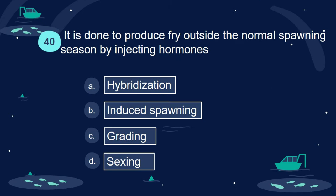Question 40. It is done to produce fry outside the normal spawning season by injecting hormones: A. Hybridization. B. Induced spawning. C. Grading. D. Sexing.